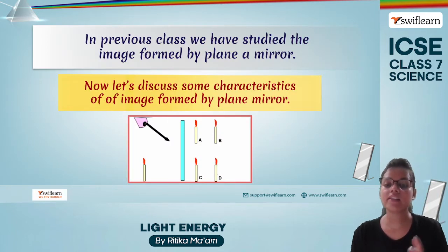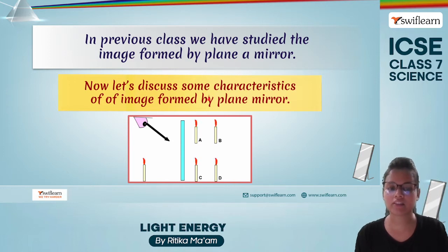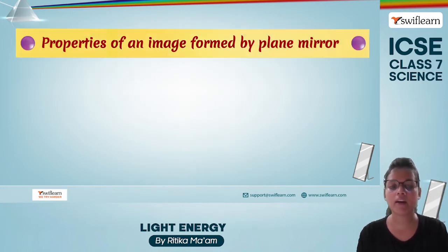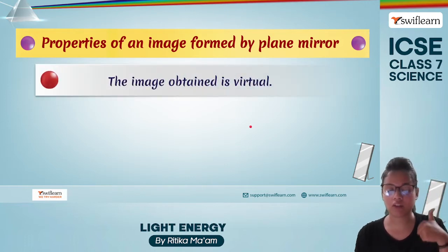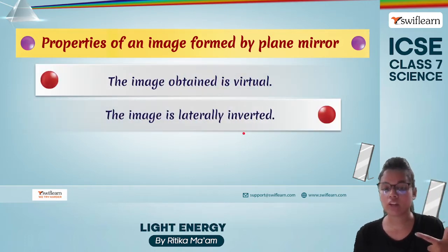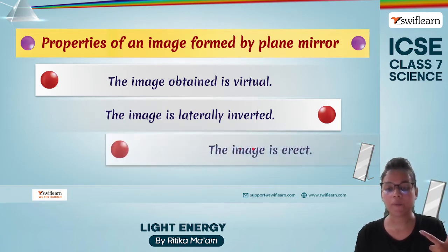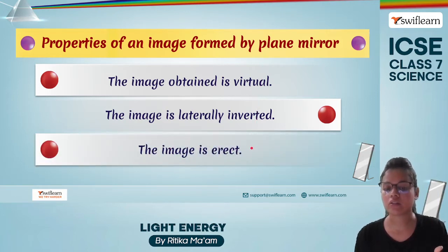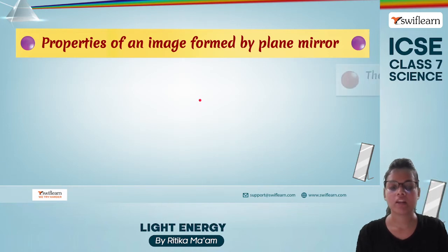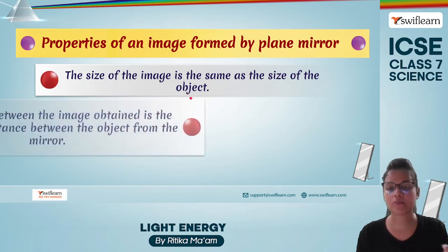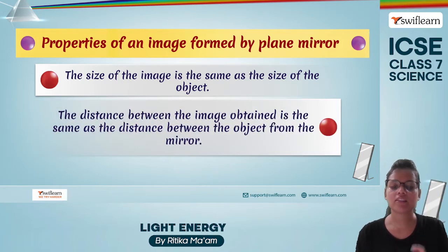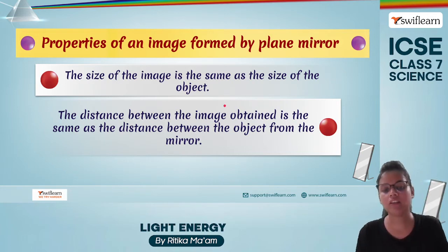Now let's see the characteristics of any image formed by a plane mirror. First, it is virtual and erect. Second, it is laterally inverted. Third, the size of the image is the same as the size of the object. Fourth, the distance of the image from the mirror is the same as the distance of the object from the mirror.